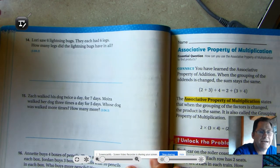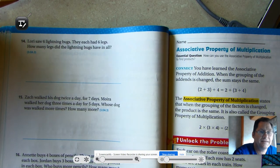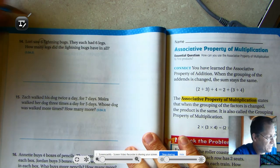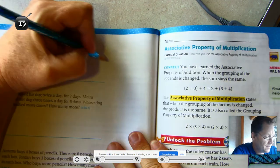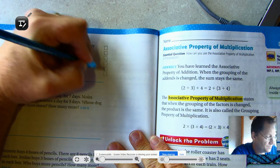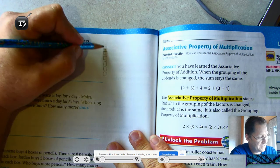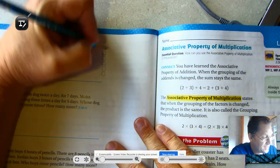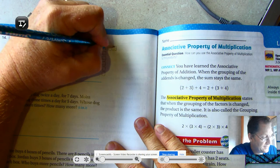Lori saw six lightning bugs. They each had six legs. How many legs did the lightning bugs have in all? So we have six lightning bugs, six legs each. We would draw a picture to solve this one if we needed to. We have six rows to represent the six lightning bugs. Each lightning bug has six legs.